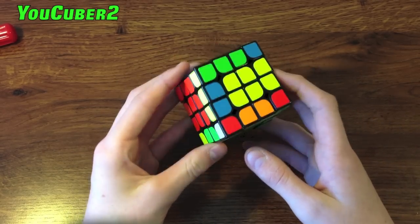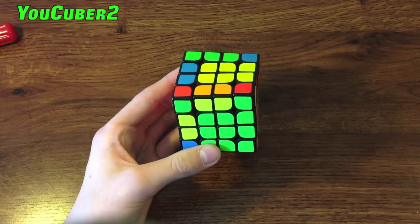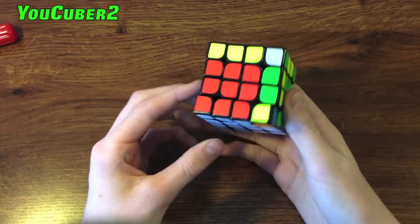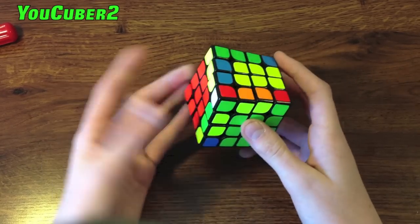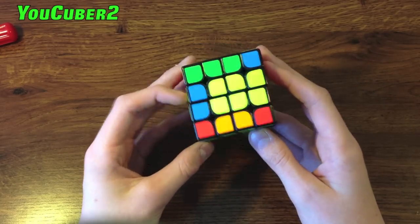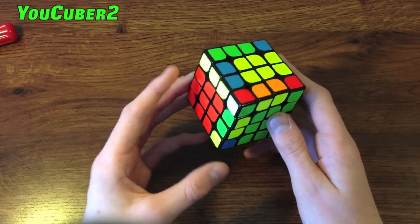All right this is probably the simplest case that you'll ever get in predicting parity. As you can see we have everything solved except for the last F2L pair and then obviously OLL and PLL. But what we're going to be looking at is what I call good and bad edges.